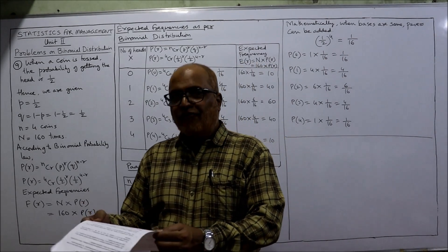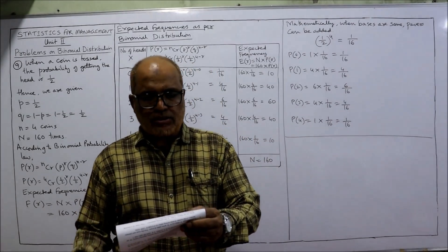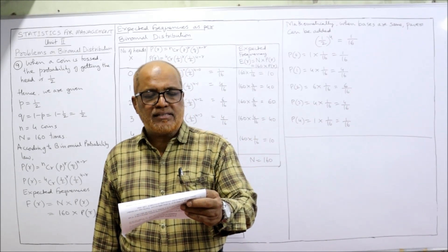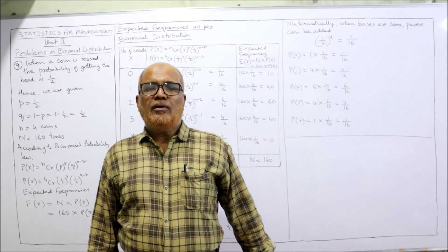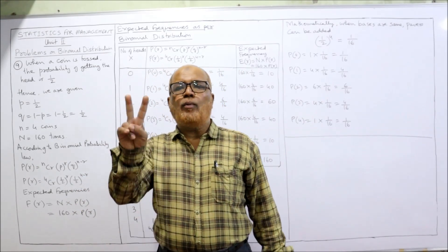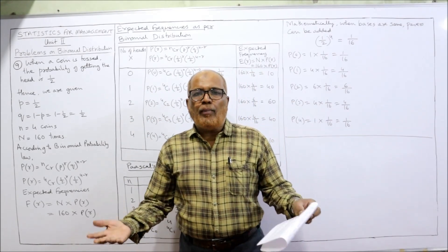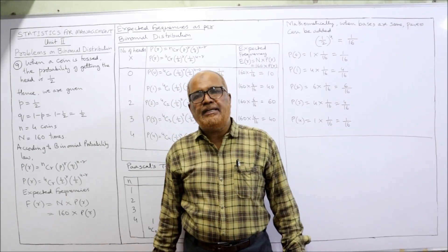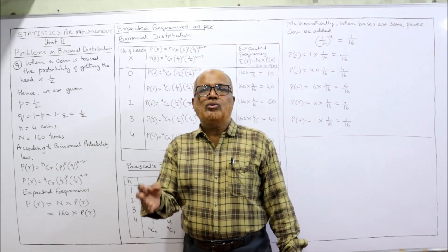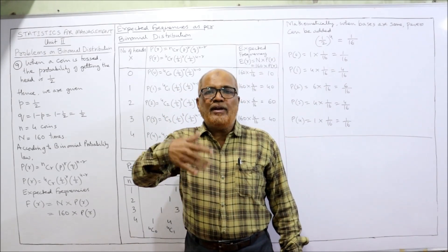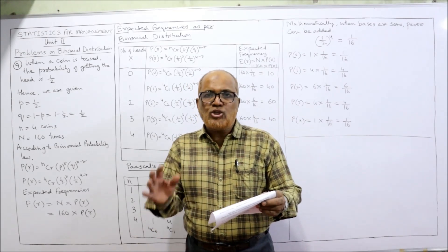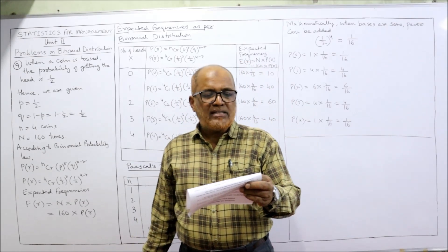Now see the ninth problem: four coins are tossed 160 times; the number of heads observed at each throw is recorded and the results are given below. The experiment is the throwing of a coin. When you throw a coin there are two possible outcomes — head or tail. The probability of head is 1/2 and probability of tail is also 1/2. Here we are throwing four coins at a time, and this experiment is done 160 times.